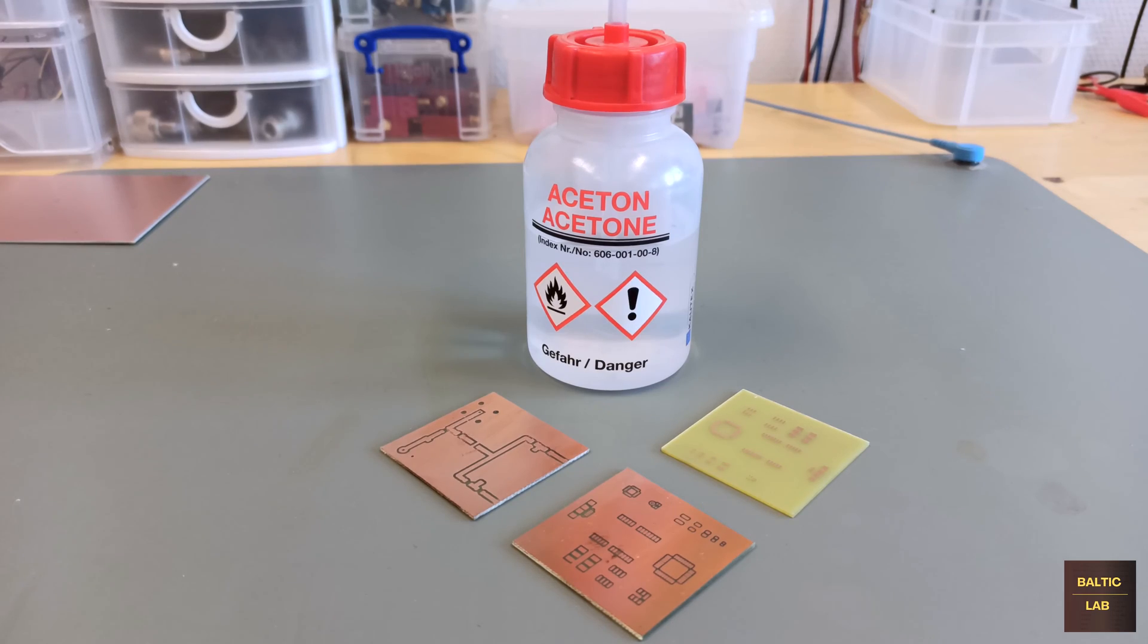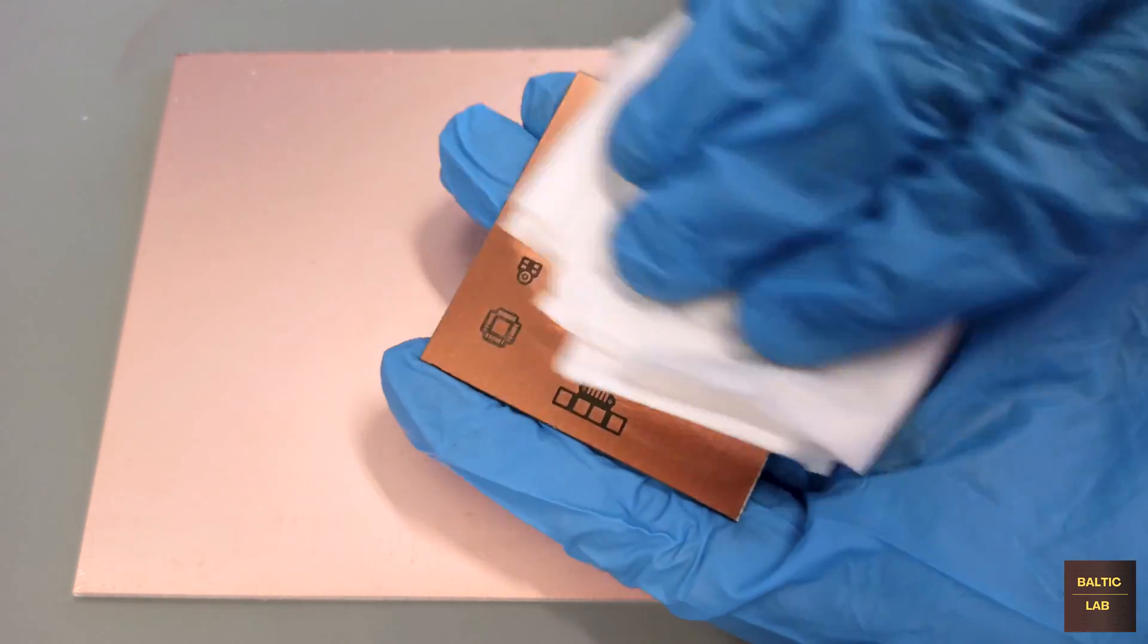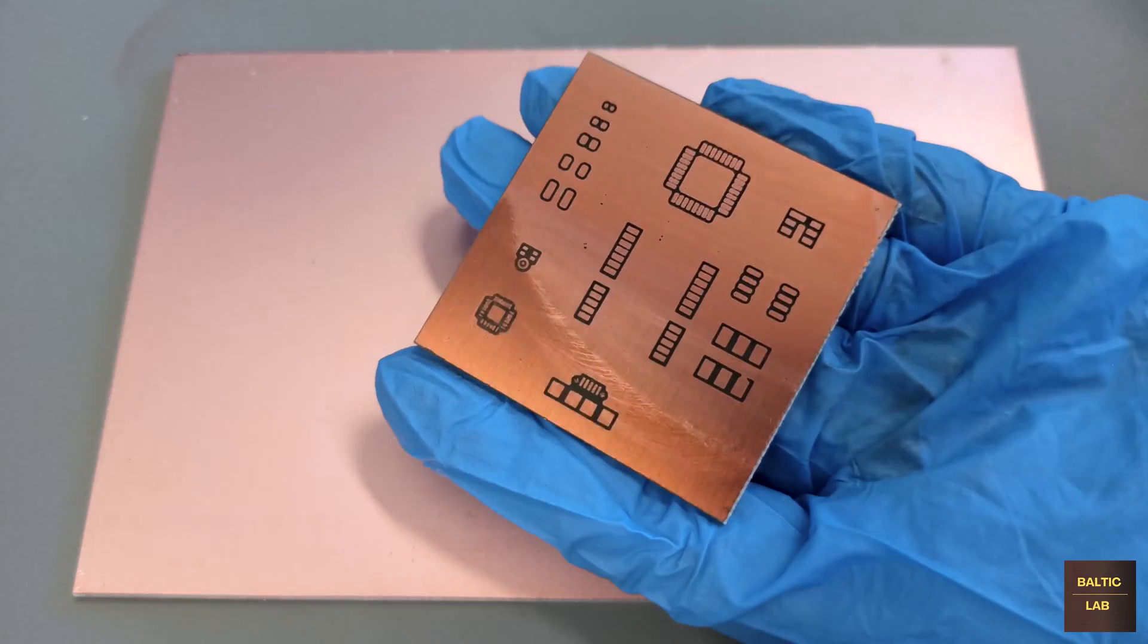After the etching process is completed, the remaining photoresist is stripped off by wiping the PCB with a bit of acetone.